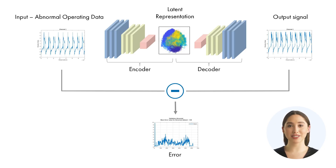Autoencoders are trained by comparing the output of the decoder to the original input. The encoder is then adjusted to reduce the difference between the two. This process is repeated until the difference is minimized.